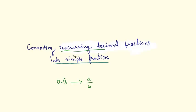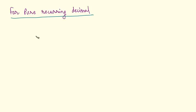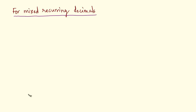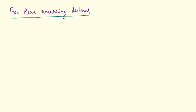In this video, we will be looking at tricks to convert recurring decimal fractions like 0.3 recurring to simple fractions in the form of a by b. Recurring decimal numbers are of two types: pure recurring decimal and mixed recurring decimal, and there are two different tricks for converting these numbers. Let's do this with the help of an example.